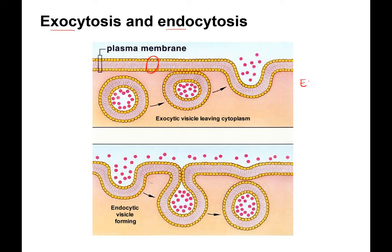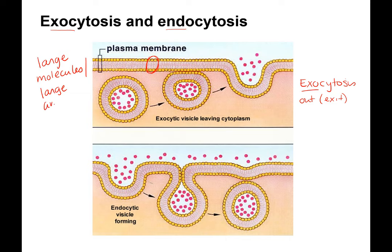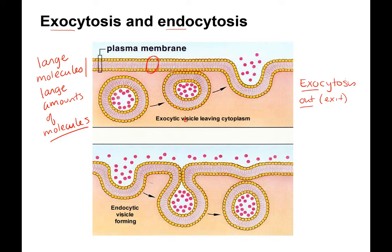The first one is exocytosis. Exo means going out — think exit. This is a way to move large molecules or large amounts of molecules out of the cell. This exocytic vesicle — we usually spell vesicle with an E — these are also called secretory vesicles for secretion. Secretion means it's going out of the cell.